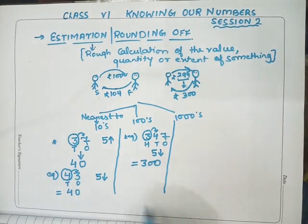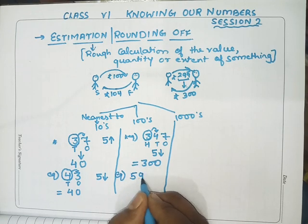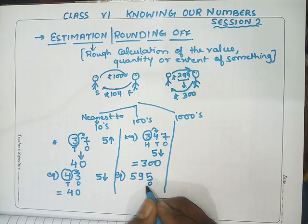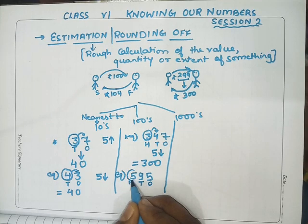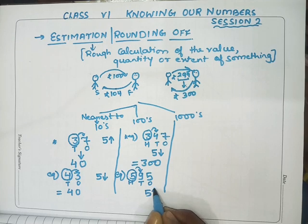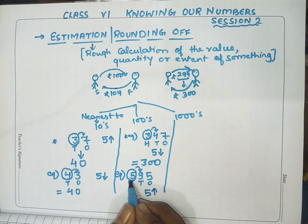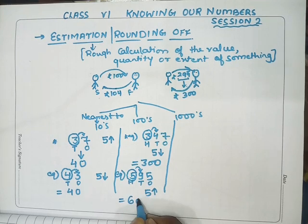Another example: 595. The ones place is 5, tens place is 9, and hundreds place is 5. To round to the hundreds place, we check the tens digit — it is 9, which is greater than 5. When the next digit is greater than 5, we add 1 to the preceding value: 5 + 1 = 6, and the remaining places become 00. The final answer is 600.